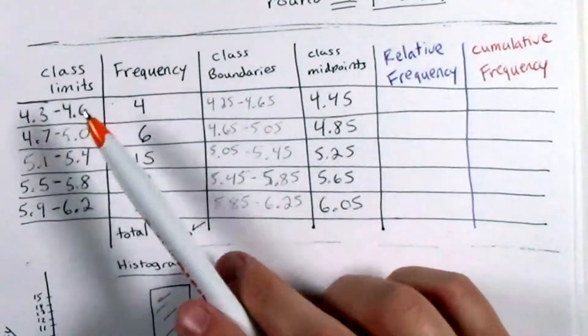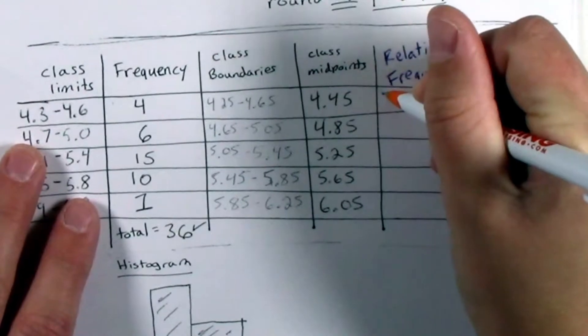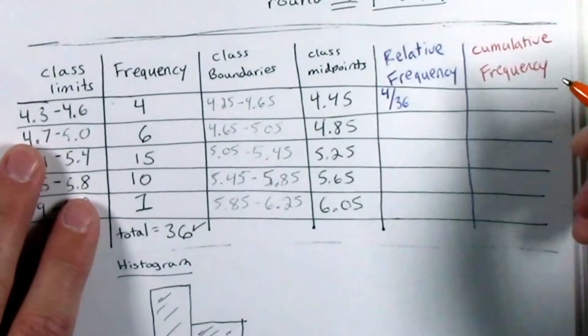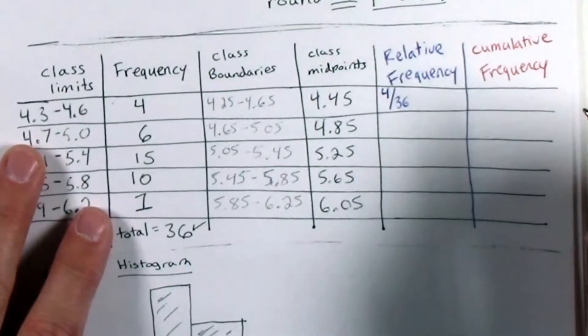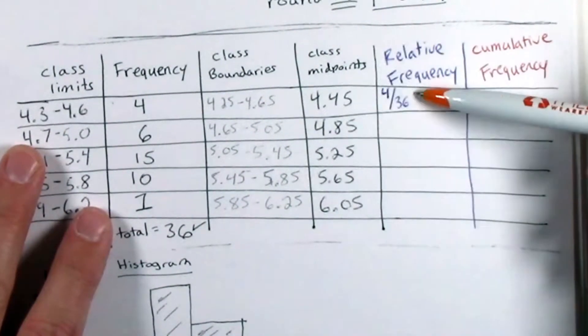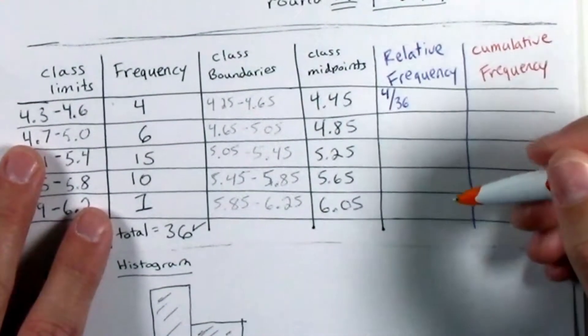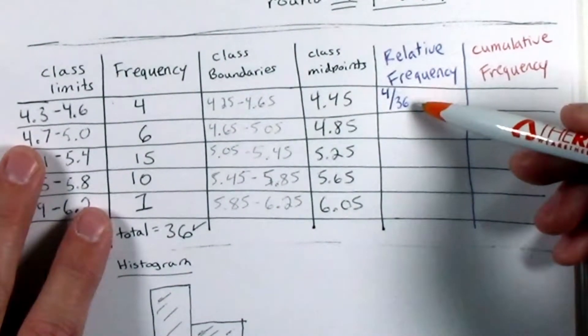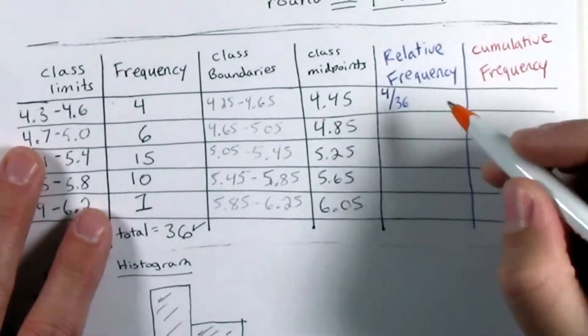So starting with the first class, between 4.3 and 4.6 seconds, there were four observations in the frequency between those two times. All right, so four out of 36. So four relative to the total of 36 observations. And this 4 out of 36 can be reported as a fraction,